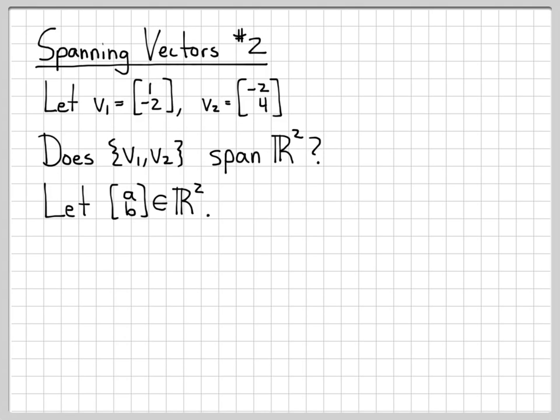In the previous video, we already discussed what it means to span R². It means that any arbitrary vector from R² can be written as a linear combination of the vectors v1 and v2.